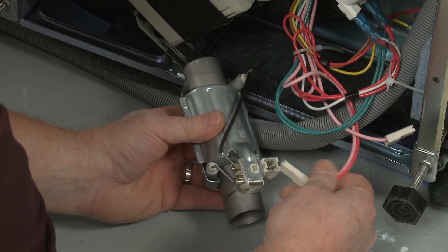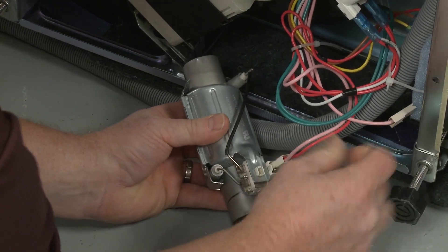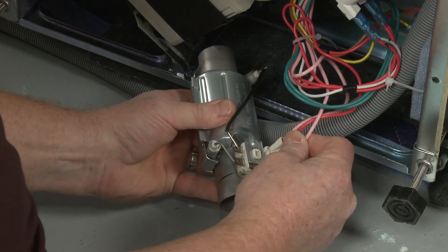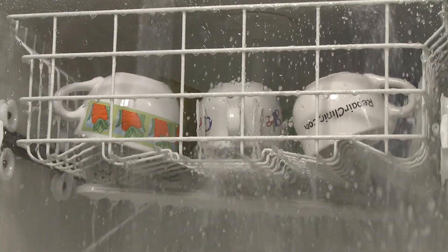Depending on the model, a dishwasher may use a flow-through heating element as part of the circulation pump assembly to heat the water being circulated through the appliance.